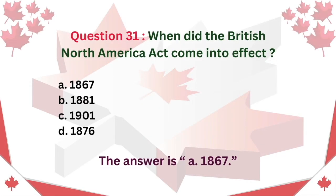Question 31. When did the British North America Act come into effect? A. 1867 B. 1881 C. 1901 D. 1876. The answer is A. 1867.